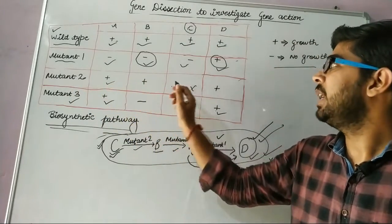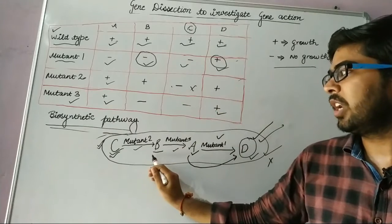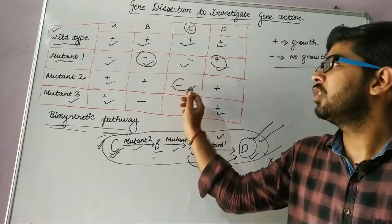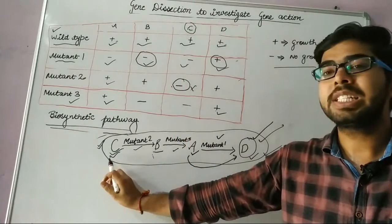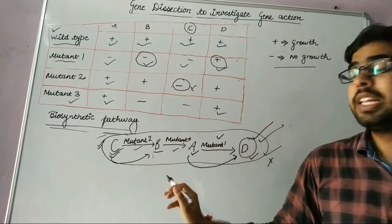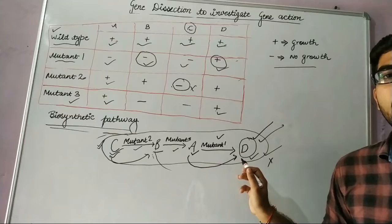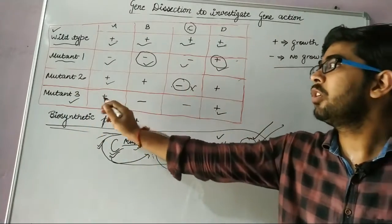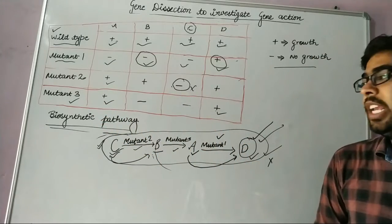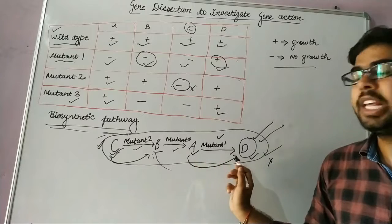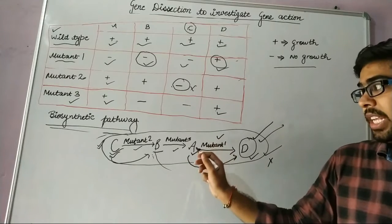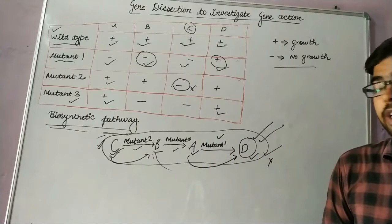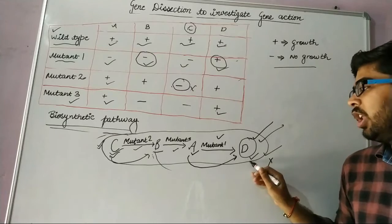In mutant 2, growth is found with A, B, and D, because they are found after the mutant 2 region. But there is no growth with C, because C cannot be converted into B, and therefore the final product D is not produced. In mutant 3, growth is found in A and D containing media, since A and D are found after the mutant 3 site. When A is added, it is converted into D and there is growth; when D is added, the end molecule is already present and there is growth.